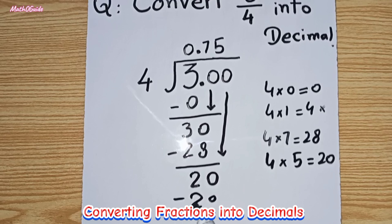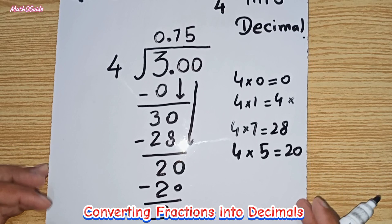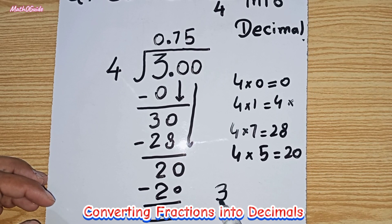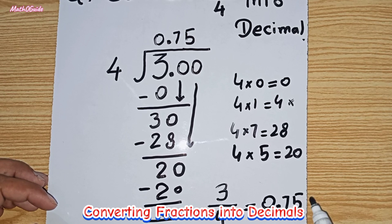We can write 5 in quotient and then subtract 20 from 20. We will get remainder as 0, so our fraction has been converted into decimal. We can write the final answer: 3 upon 4 in fraction form equals 0.75 in decimal form.